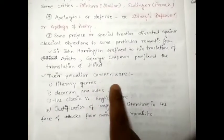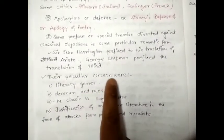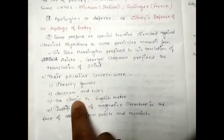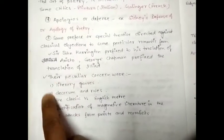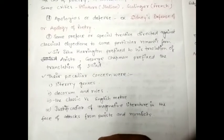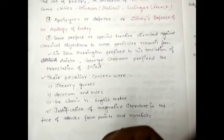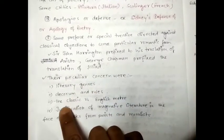Their peculiar concerns included literary genre, decorum, and rules. The critics of the age were talking about these things — what writers think about criticism, what are the standards. That was the first concern.